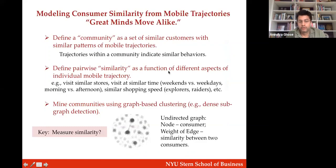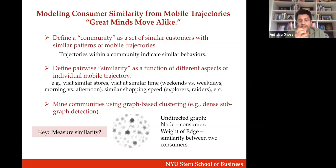First, we are going to model consumer similarity from the trajectories. There's an old saying that great minds think alike — we are saying great minds mobilize alike, meaning people with similar preferences tend to have similar shopping trajectories. We define a community as a set of people with similar mobile trajectories. Similarity is a function of very diverse aspects of your trajectory.